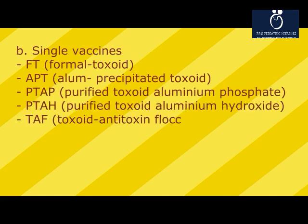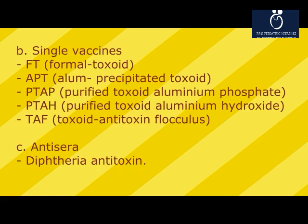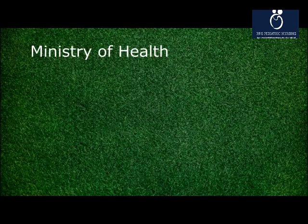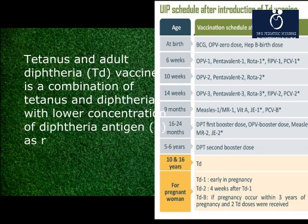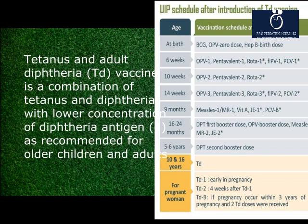(B) Single vaccines include FT (formal toxoid), APT (alum precipitated toxoid), TAP (purified toxoid aluminium phosphate), PTAH (purified toxoid aluminium hydroxide), and TAF (toxoid antitoxin floccules). (C) Antiserum: diphtheria antitoxin. The Ministry of Health and Family Welfare has recommended replacement of TT vaccine with TD vaccine in India's immunization program for all age groups including pregnant women. TD vaccine is a combination of tetanus and diphtheria with lower concentration of diphtheria antigen, as recommended for older children and adults.